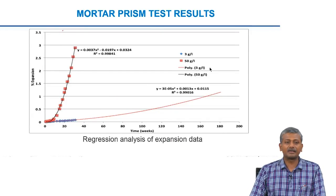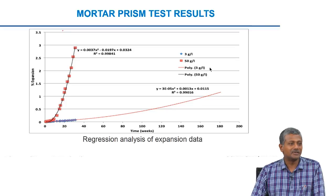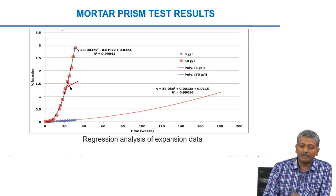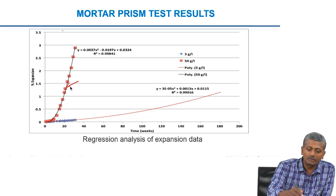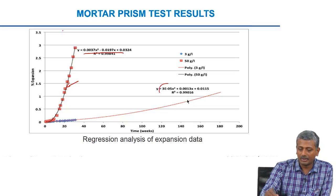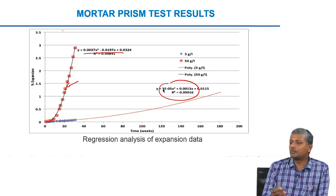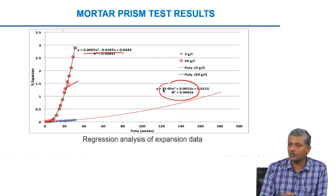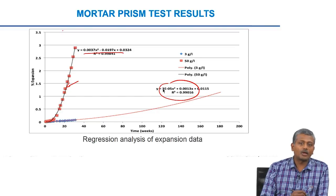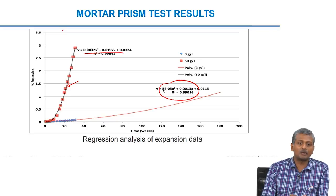Engineers like to see models fitted through data. For the 50 g/L OPC mortar, a very high level of expansion is shown, and fitting it into a quadratic relationship gives constants associated with the quadratic equation. Similarly for the 3 g/L solution, the fit is quite good with a quadratic relationship. This may help to some extent in predicting the time at which expansion will exceed a certain critical value. Although that critical value is stated as 0.1% in ASTM C1012, one can decide based on site conditions what that critical expansion should be.